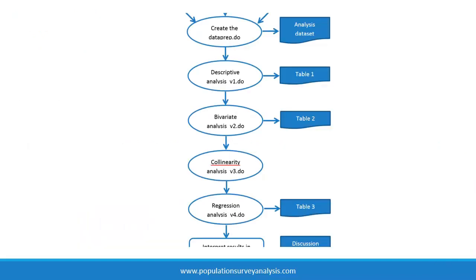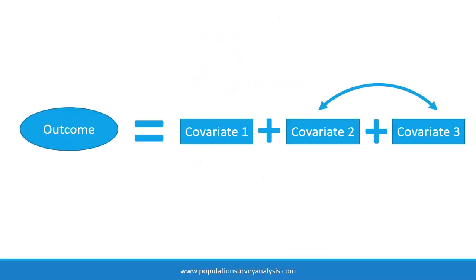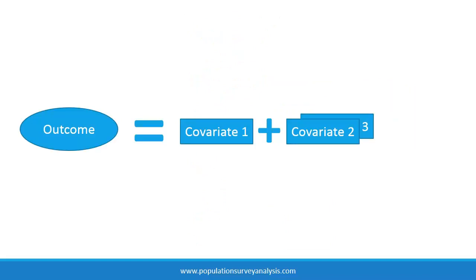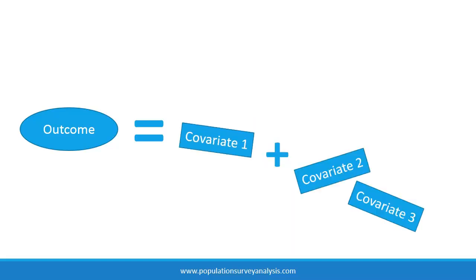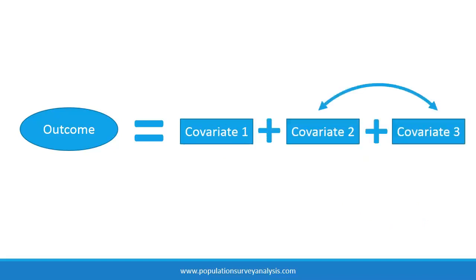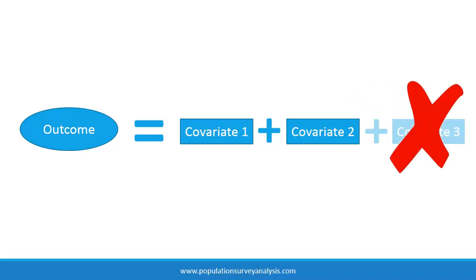Collinearity occurs when two covariates in a multivariable model are highly related, usually because two variables represent the same thing. One variable does a good job explaining variance in the outcome, leaving little leftover variance to be explained by the other covariate. As a result, the model becomes unstable. To produce parsimonious, efficient multivariable models and to prevent strange, unstable results, we test for strong associations among covariates and remove any collinear covariates from the analysis.